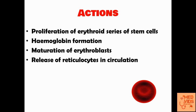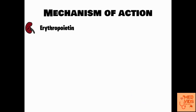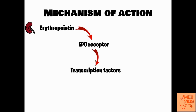When erythropoietin is secreted by the peritubular cells in the kidneys, it acts on target cells via erythropoietin receptors, which are JAK-STAT receptors. Upon activation of these receptors, there will be phosphorylation of various substances present inside the target cell, leading to transactivation of various transcription factors and various genetic changes taking place inside the target cell.